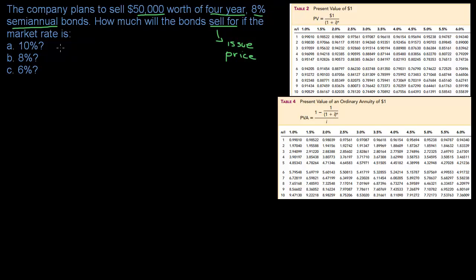We have three different scenarios. The first thing I like to do before running through the calculations is to determine if the bonds are going to sell for par, a premium, or a discount. I like to run through that exercise first because then when I calculate the numbers I know what to expect.